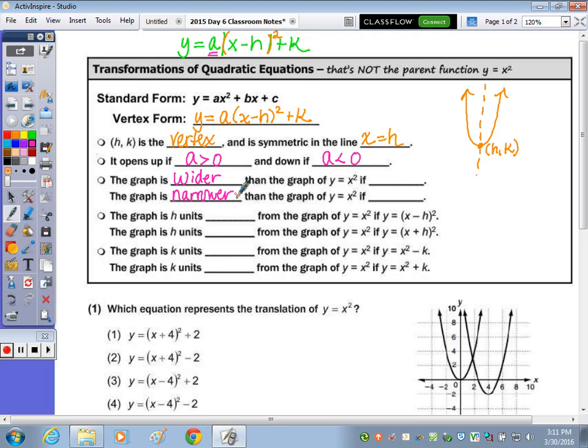The next two lines deal with wider and narrower than our standard function y equals x squared. In that case, we take a look at the a value as well. However, y equals x squared has an a value of 1. So this all compares to that value of 1.